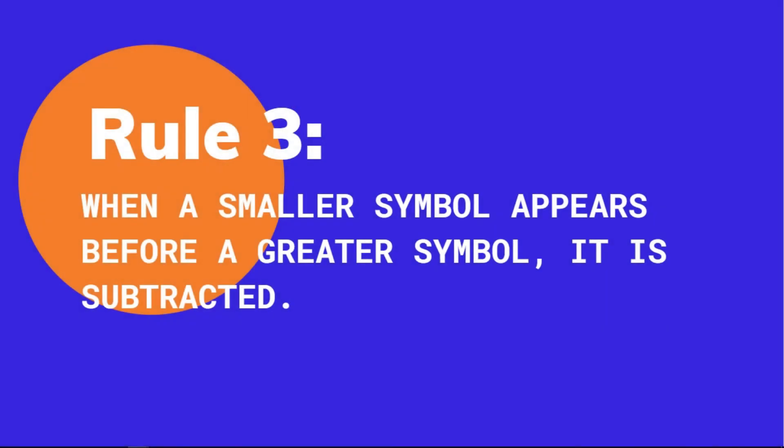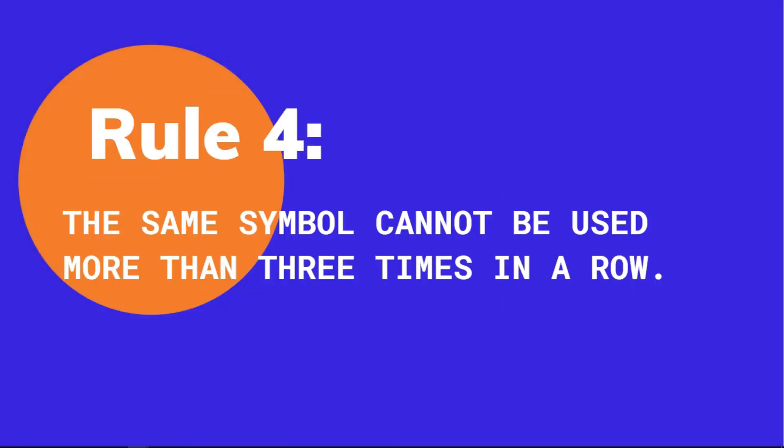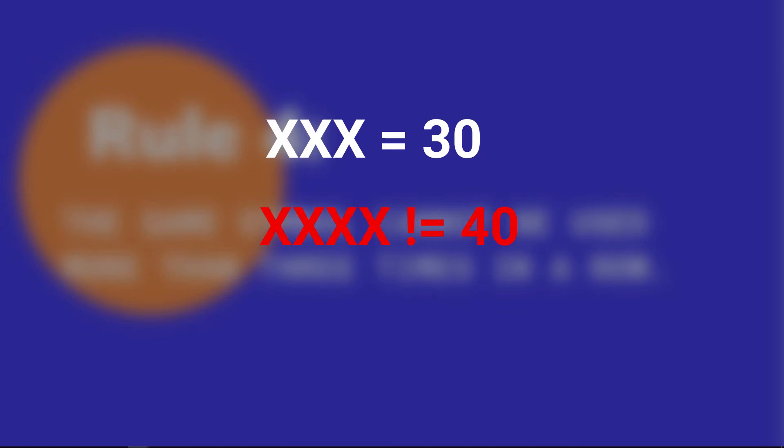The fourth rule is that the same symbol cannot be used more than three times in a row. We write 3 as III, and we write 4 as IV, not IIII. Similarly, we can write XXX for 30, but for 40 we must write XL, not XXXX.